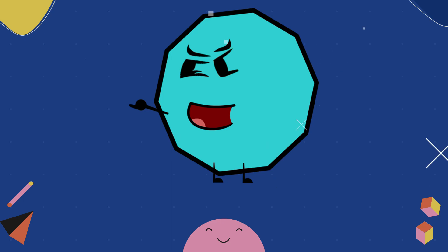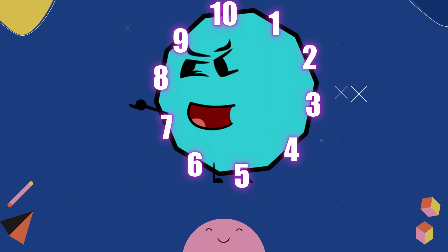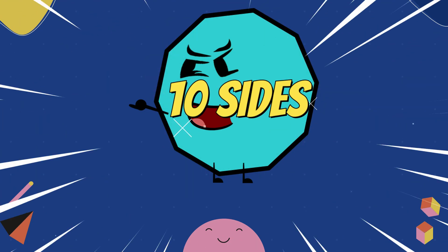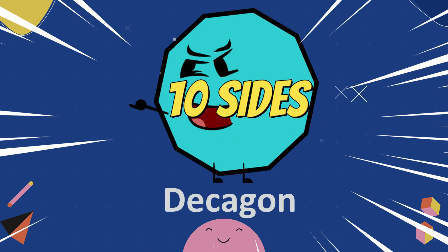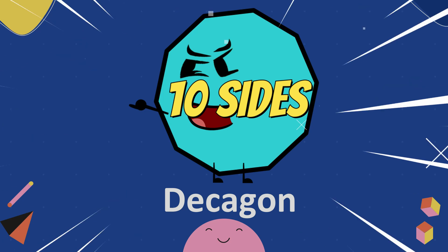Let's count the number of sides. One, two, three, four, five, six, seven, eight, nine, ten. Ten sides is decagon. Deca means ten. Decagon.